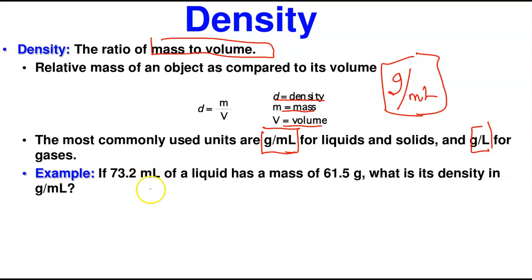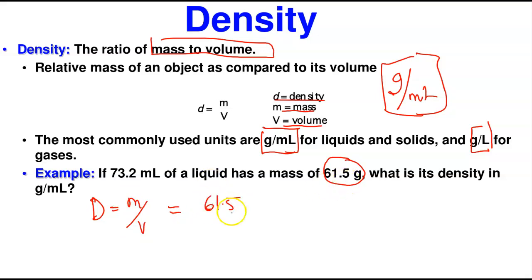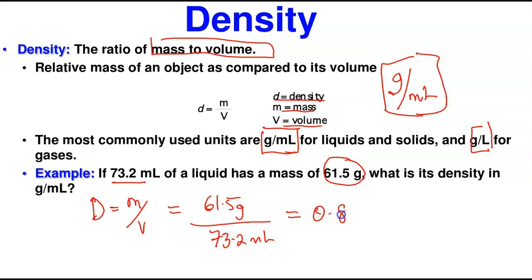Here's an example: if 73.2 mL of a liquid has a mass of 61.5 grams, what is the density? Simply use the formula density = mass / volume: d = 61.5 g / 73.2 mL = 0.840 g/mL. One important takeaway here is that density has two units — a unit on top and a unit below, grams per milliliter.